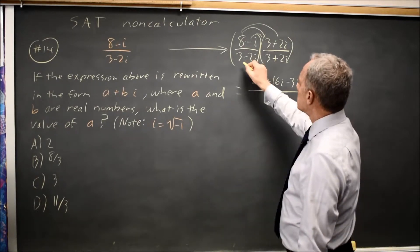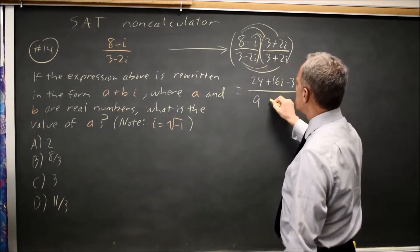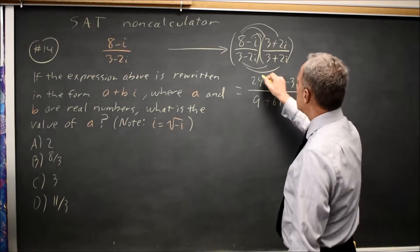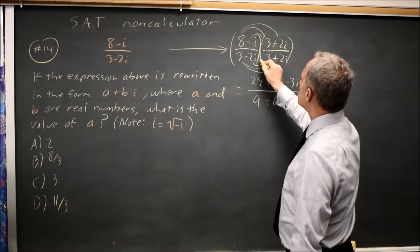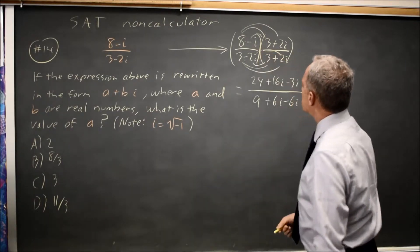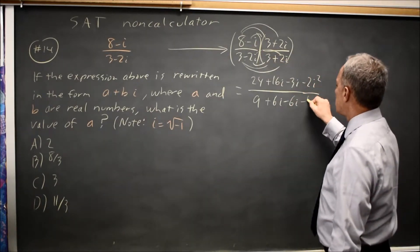My denominator is 3 times 3 is 9, 3 times 2i is positive 6i, negative 2i times 3 is negative 6i, and negative 2i times positive 2i is negative 4i squared.